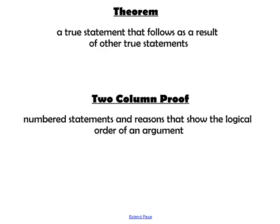Reasoning in Algebra and Geometry: an Introduction to Two-Column Proofs. A theorem is a true statement that follows as a result of other true statements. A two-column proof has numbered statements and reasons that show the logical order of an argument.